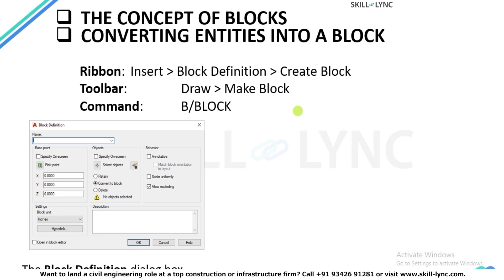There are websites where blocks are available to download and bring into your project. Blocks are objects defined by a name with an insertion point. For example, in an electrical plan you may need lighting points, power sockets, concealed lights, or switchboard locations. These objects are predefined, created, and saved inside the project so you can call and insert them as blocks with repeated use.